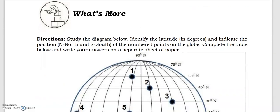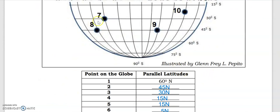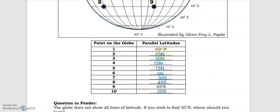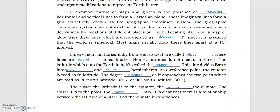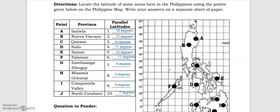Let's proceed to the What's More section. You may go over the video for the answers. Note that the degree symbol cannot be written directly without covering the labels, so please add the degree symbol — a small circle — between the number and the direction. For the What I Have Learned and What I Can Do sections, you may pause the video. The degree symbol can be written as a small circle, or you may write out the full word 'degrees.' We're almost done with part one.